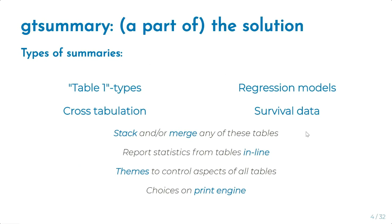Another gap bridged by GT summary is the inline text function. Once you've created your tables, if you're writing a report discussing odds ratios estimated in your model, you need to easily grab those odds ratios with the confidence level and p-value and place them straight into your report. With the inline text function, that is now possible.